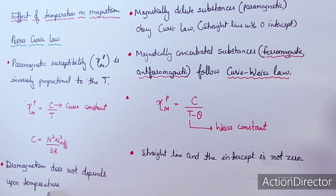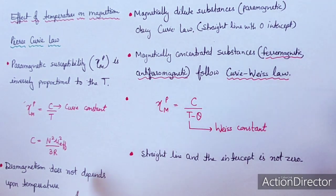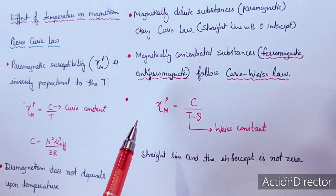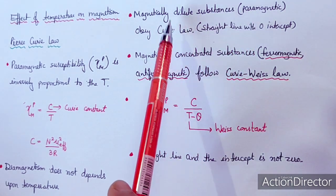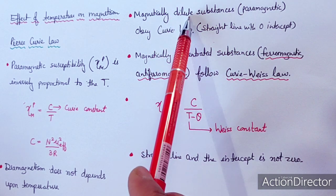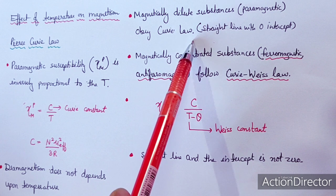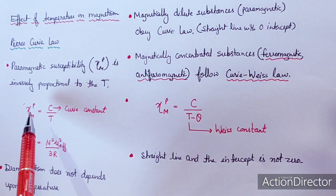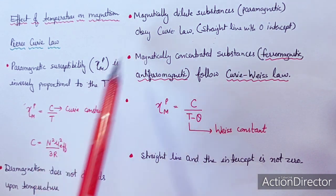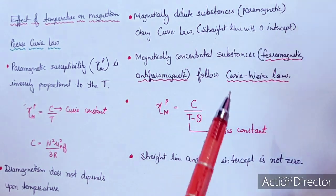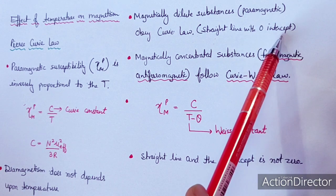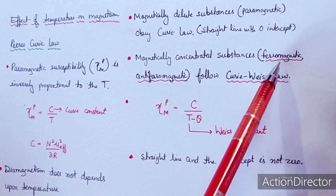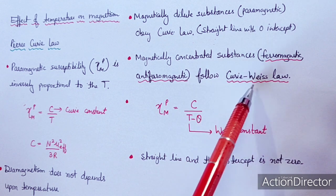Magnetically dilute substances — the paramagnetic substances — obey Curie law. In the plot between magnetic susceptibility and temperature, a straight line is observed that originates from zero intercept. Magnetically concentrated substances like ferromagnetic and antiferromagnetic substances follow the Curie-Weiss law, and the straight line does not originate from zero.